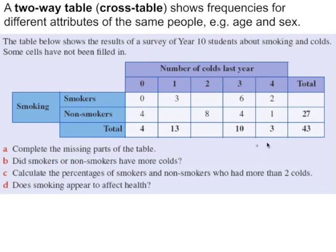So we'll start by filling in the missing parts of the table. We look at the non-smokers row. We have a total of 27 and we've got one missing number here. So we need to subtract the four, eight, four and one from the 27 which leaves ten non-smokers who each had one cold last year. And we can check with the column because three plus ten is thirteen. That's the number of people who had one cold last year. We can also check the total of the totals for the numbers of colds. Four, thirteen, ten and three adds up to thirty. But this row needs to sum to forty-three. So this missing number here is thirteen. And then we can check the column, thirteen minus eight is five. And then the number of smokers, three plus five plus six plus two is sixteen. And then one final check, sixteen plus twenty-seven is also forty-three.